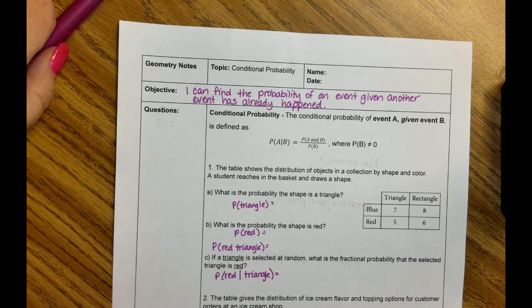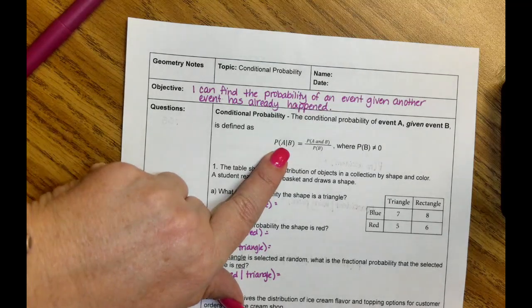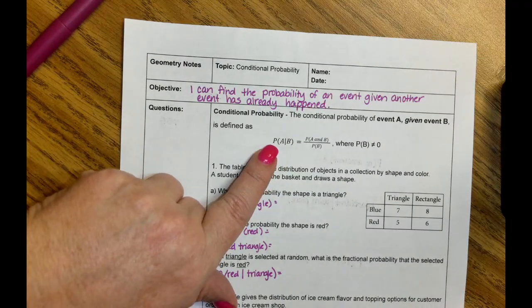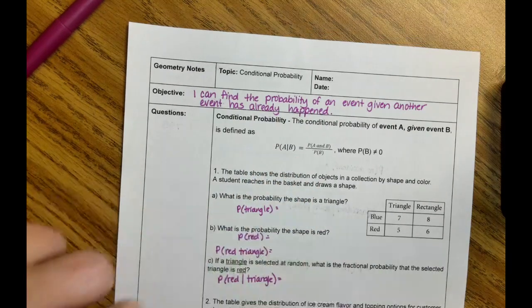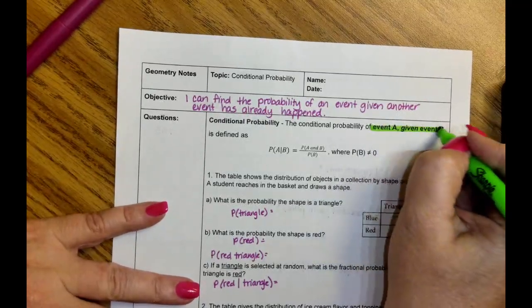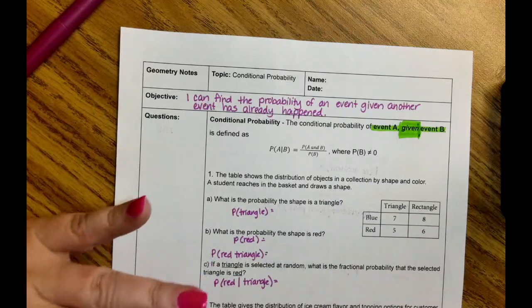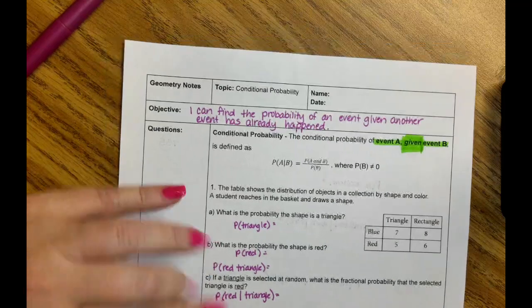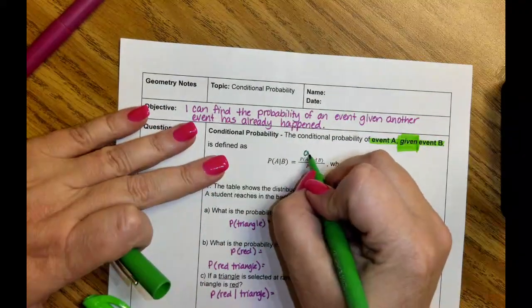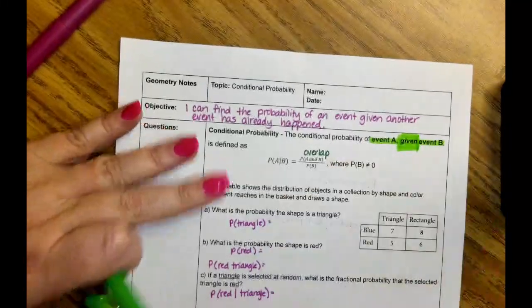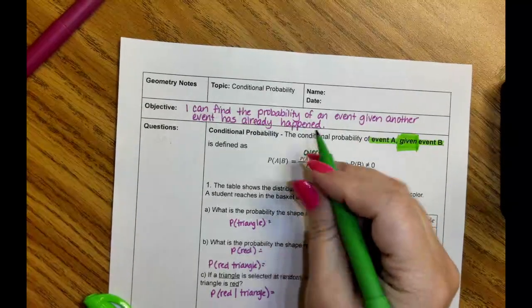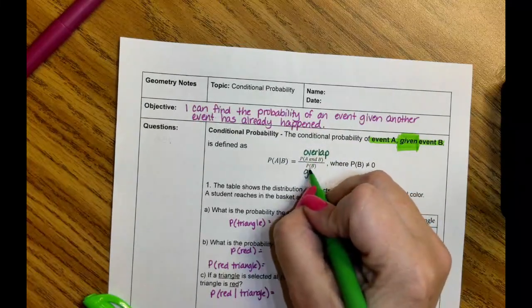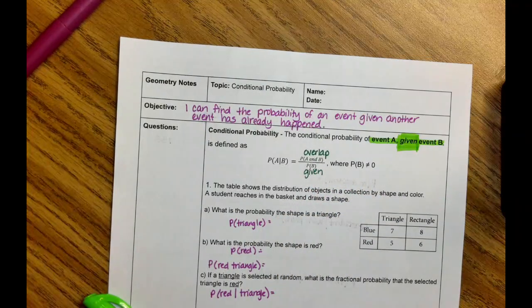The way it is written is P(A|B) — this slash right here. P stands for probability. What's the probability of A given B? That's what this reads. What's the probability that A is going to happen considering that B has already happened? What you want to do is look for the overlap: how many events fit in both categories A and B, versus how many events fit in the given — the event that we said had already happened. So it's overlap over given.